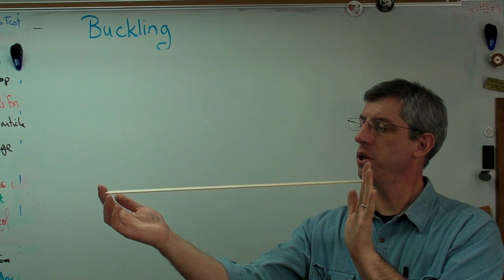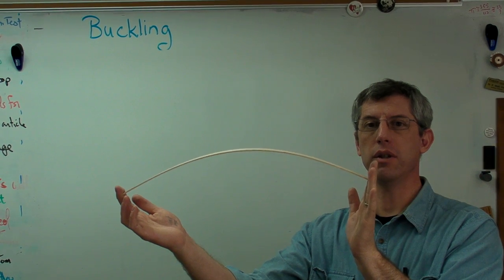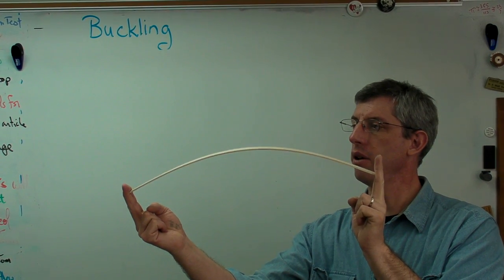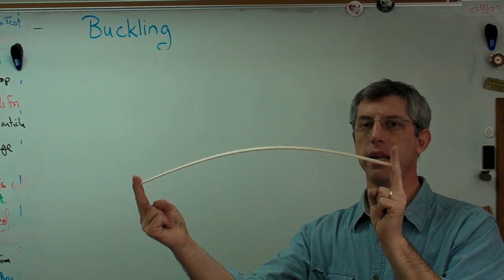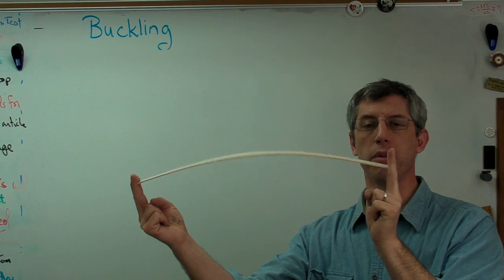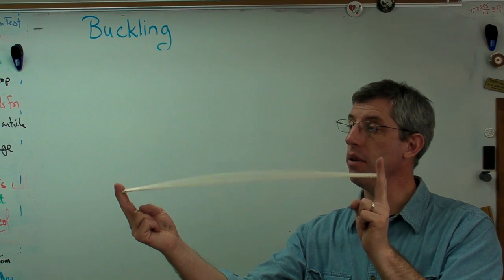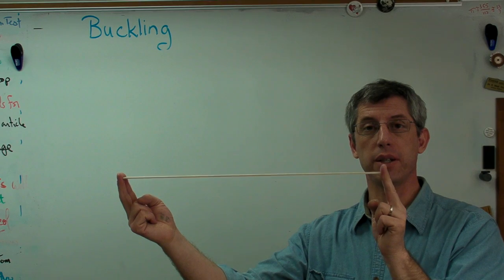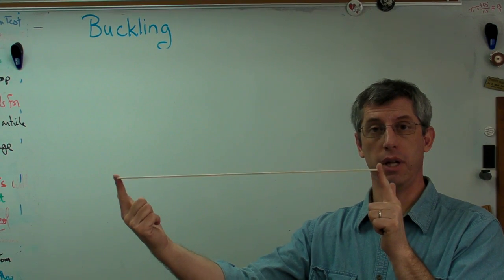So you can see here, if I take and push this, it's very easy to get this to deform to the point that it can't carry load anymore. Here it can withstand load. When I do that, it's very easy to get it deformed. This structure, if it's a column in buckling, has failed, even though the wood never plastically deformed and it never broke. When I release the load, it's straight again.